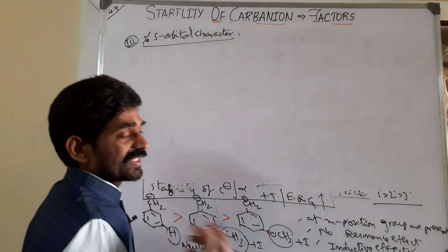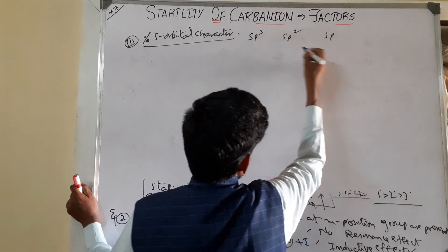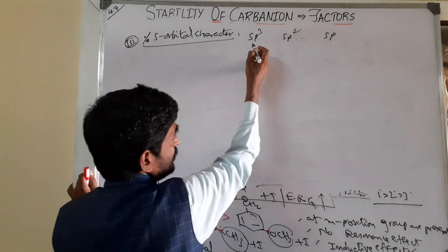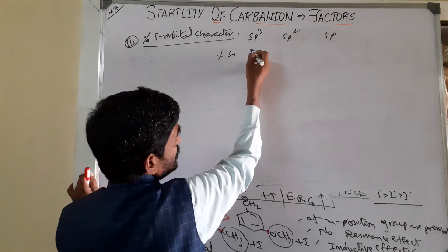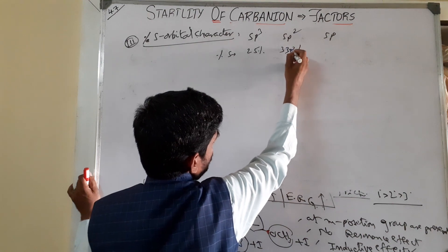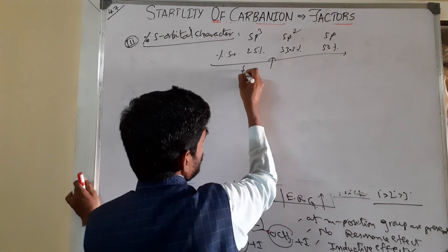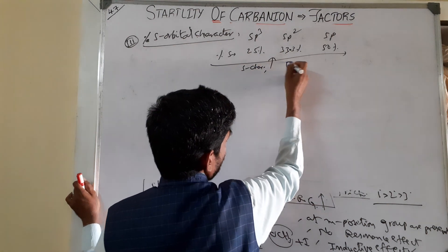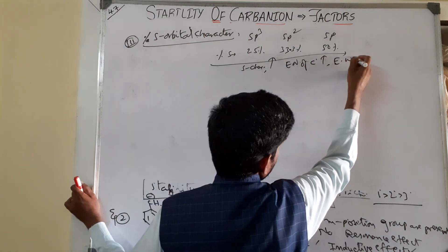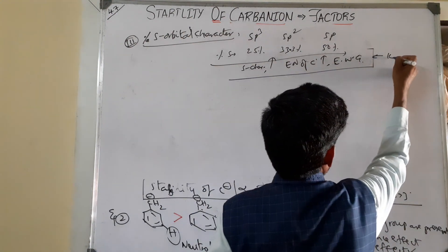The third factor is percentage of S-orbital character. You know in organic chemistry there is sp3, sp2, and sp hybridization. In case of these three hybrid orbitals available for carbon atoms: in sp3, the percentage of S-orbital character is 25%; in sp2, it is 33.3%; and in sp, it is 50%. As the percentage of S-orbital character increases, the electronegativity of carbon also increases. If electronegativity of carbon increases, it behaves as an electron withdrawing group. This concept you have to keep in your mind.